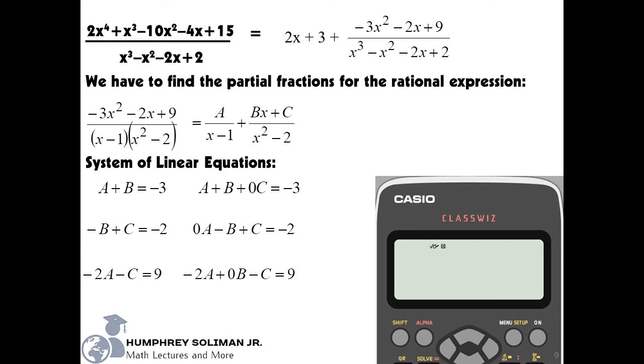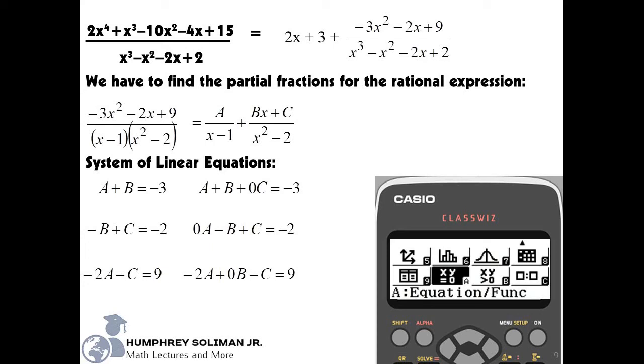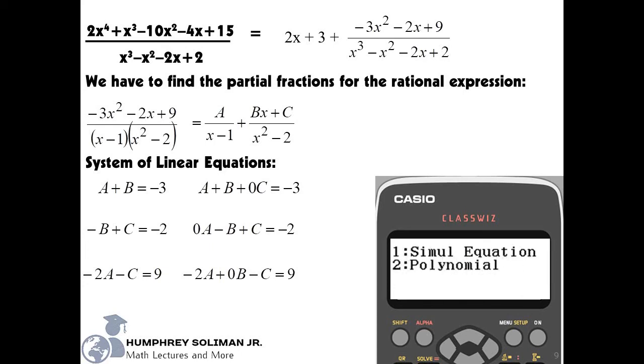We will need to put our calculator in equation mode again. Press the menu key and look for equation mode and then select by pressing the equals key. Next, we will select option 1, simultaneous equation. And then, we will input 3 for 3 unknowns.